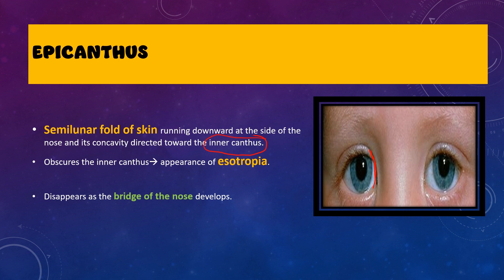This epicanthus basically disappears as the bridge of the nose starts developing. It is because of an immature or partly developed bridge of the nose, and as the bridge of the nose develops, the epicanthus will disappear in most children. However, it can persist in a few, in which case it can cause pseudoesotropia.